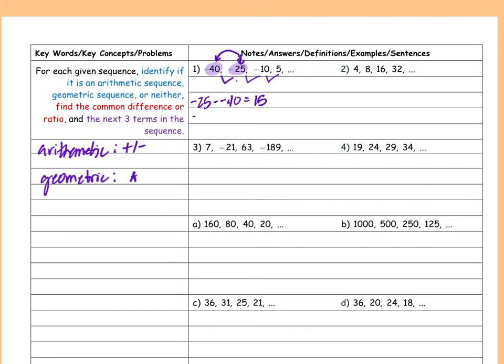So I can do it again: negative 10 minus negative 25 equals 15. And then the last two terms: 5 minus negative 10, which is also 15. So what am I doing every time? I am adding 15. Which type of sequence is that — arithmetic or geometric?